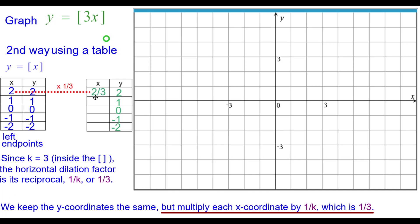So 2 times 1 third is 2 thirds. So 2 thirds comma 2 will be our left endpoint, and remember our step is going to be only 1 third of a unit wide.